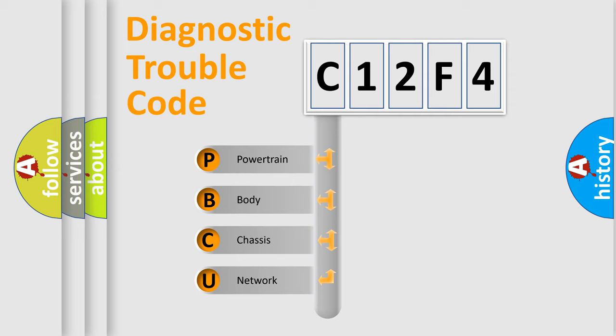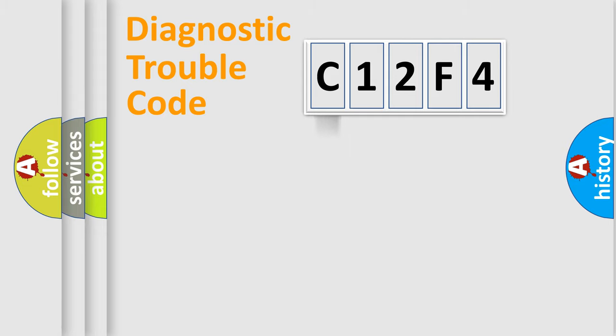We divide the electric system of automobile into four basic units: Powertrain, body, chassis, and network. This distribution is defined in the first character code.